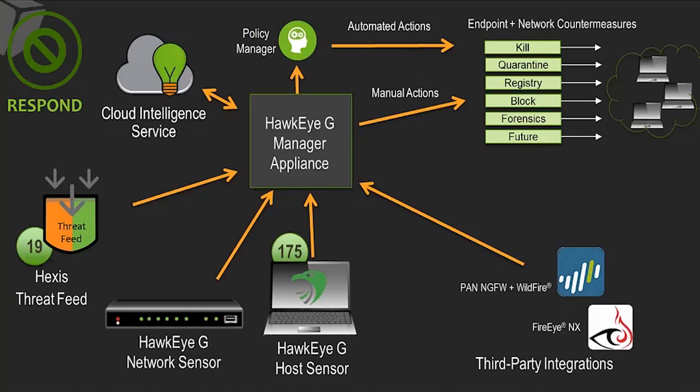We have the ability to drive automated actions based on policy. For a given threat score, device type, or location — even at a certain time of day — you can drive automated actions. For example, for file servers you may only want to kill known malicious running processes, while for other back-office machines you can automate file quarantine and registry removal even for suspicious activity. You can tune those automation policies to align with your corporate security strategy, response protocols, and your security analyst staff's manual actions.